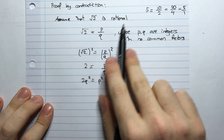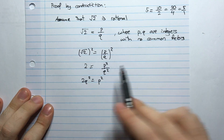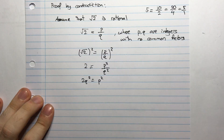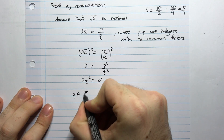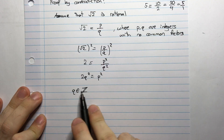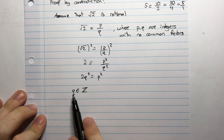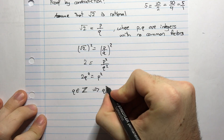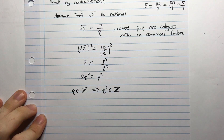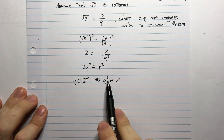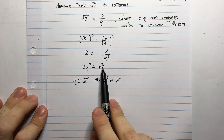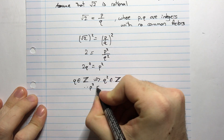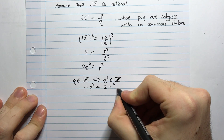This statement — 2q squared equals p squared — is really everything we need to prove that root 2 is irrational. We know p and q are integers, so q squared is also an integer. That means p squared equals 2 times an integer, so therefore p squared is even. You take any integer and multiply it by 2, you're guaranteed to get an even number.